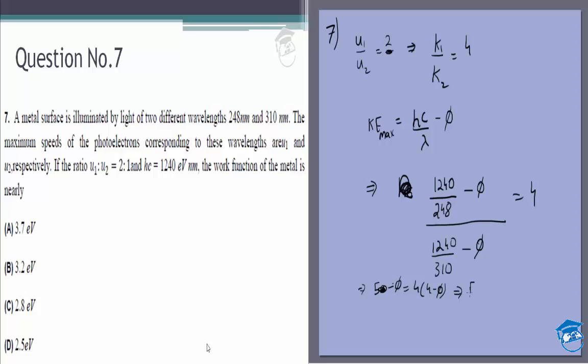Which means 5 minus phi is equal to 16 minus 4 phi, which means 3 phi is equal to 11, or phi is equal to 11 by 3, which is approximately 3.7.